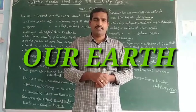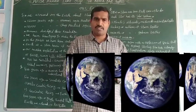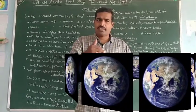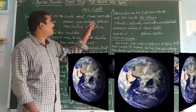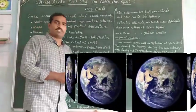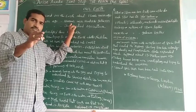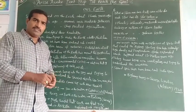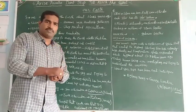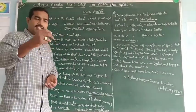We live on Earth along with millions of animals, plants, and other microorganisms. When did we arrive on the Earth? We arrived on the Earth 1 lakh years ago. 12,000 years ago, humans were hunters and gatherers — they were hunting animals and collecting and gathering their food. 10,000 years ago, humans practiced agriculture.